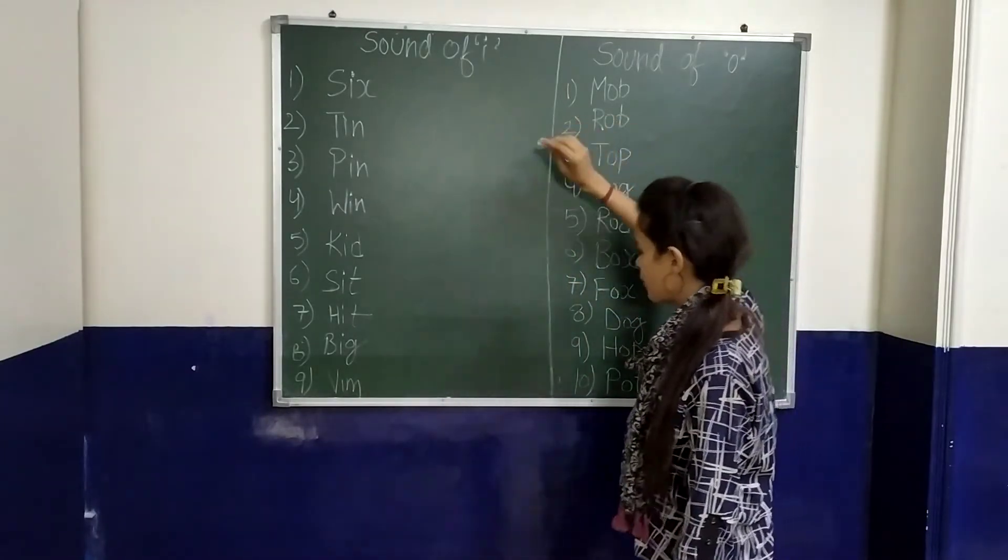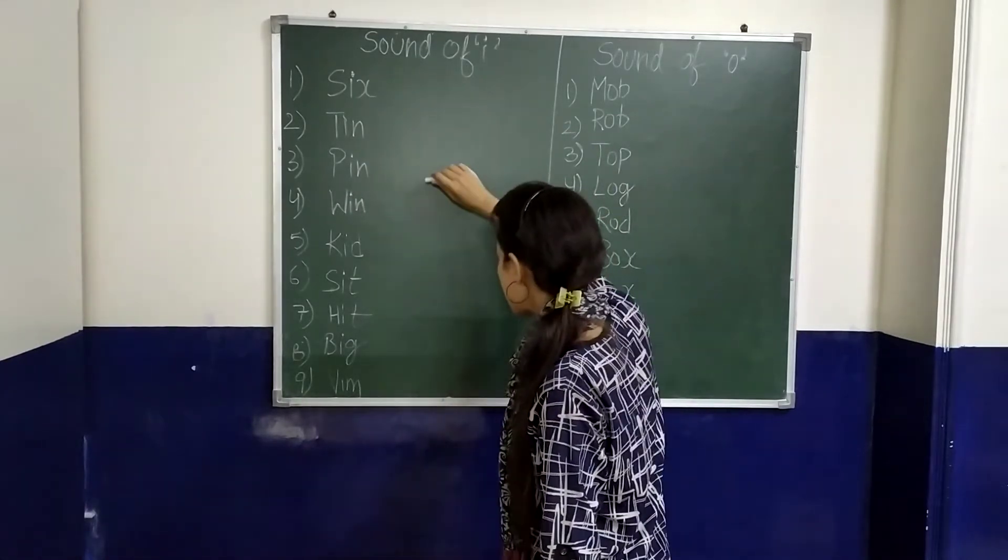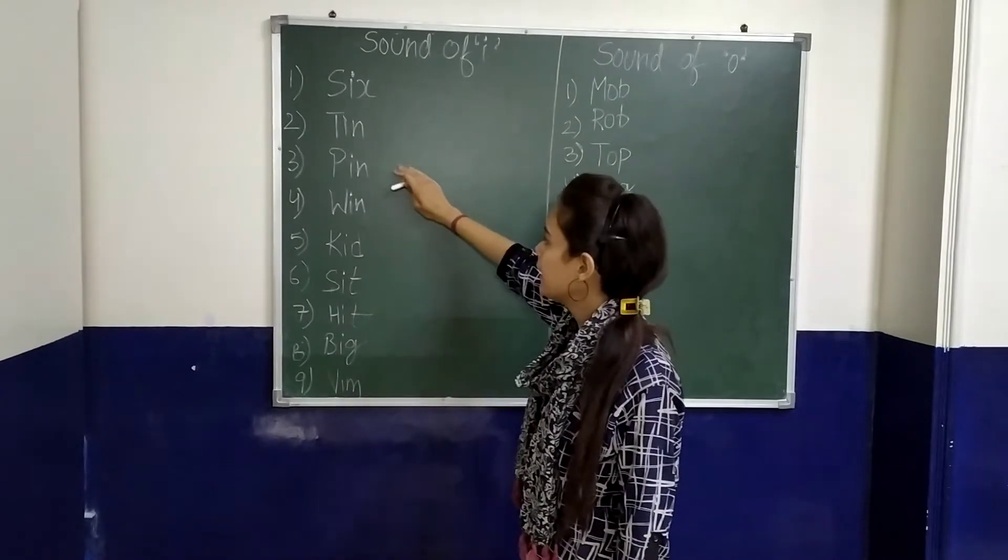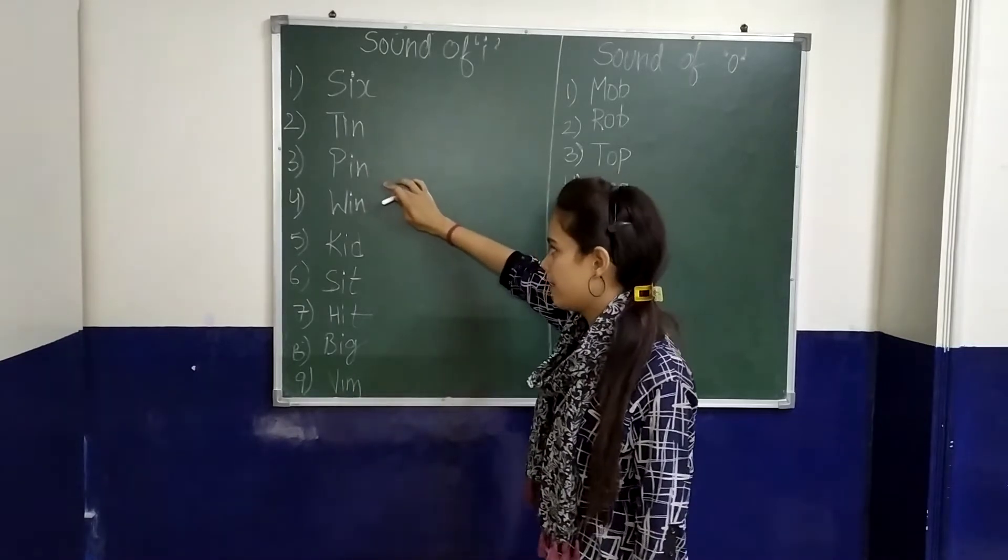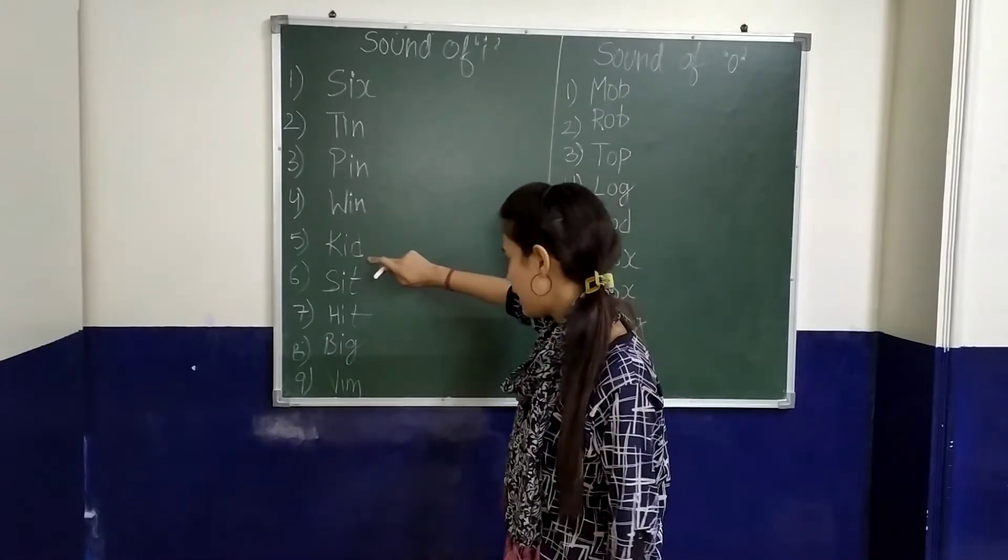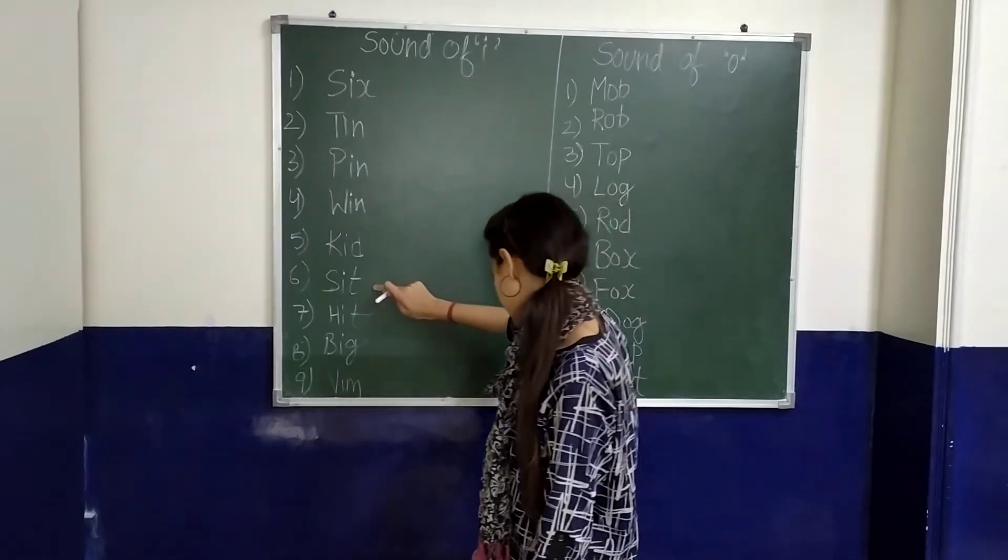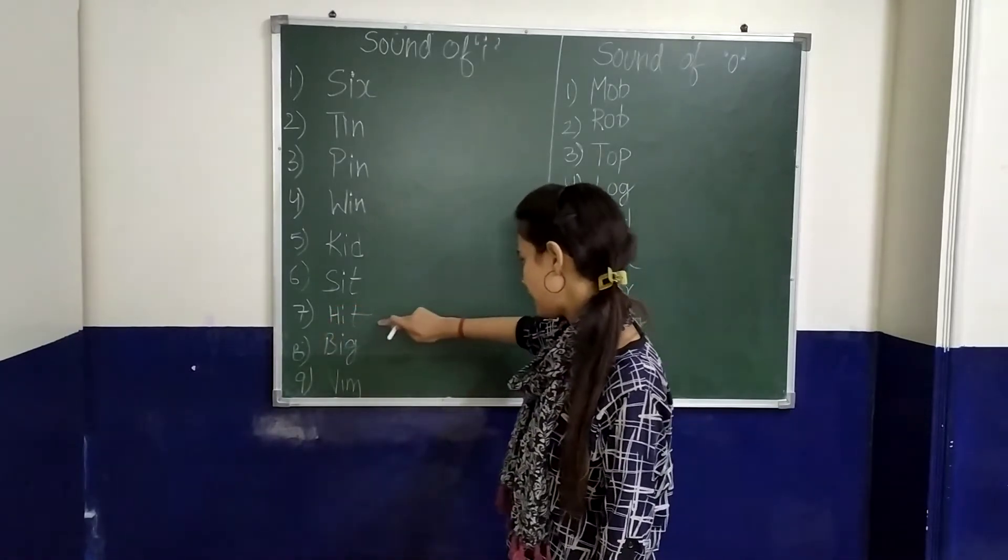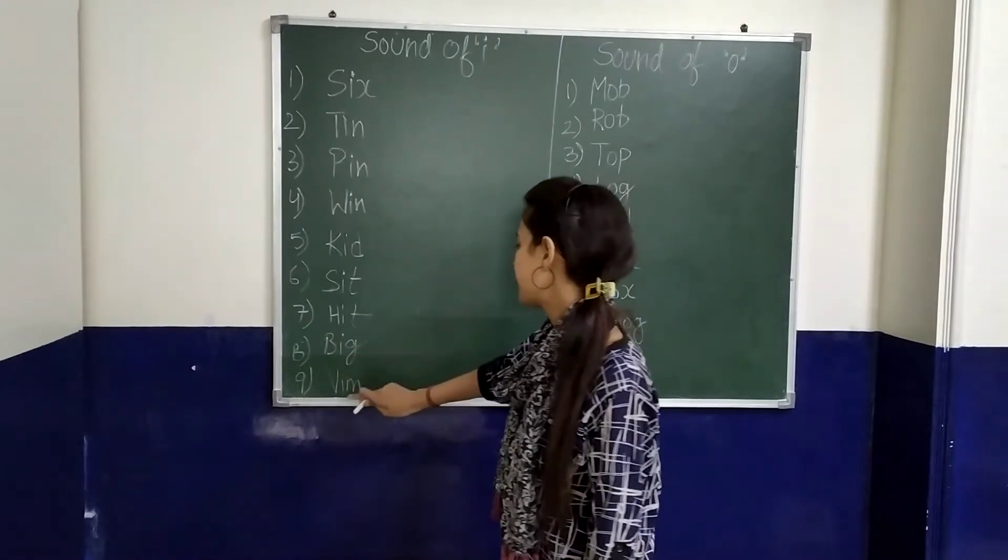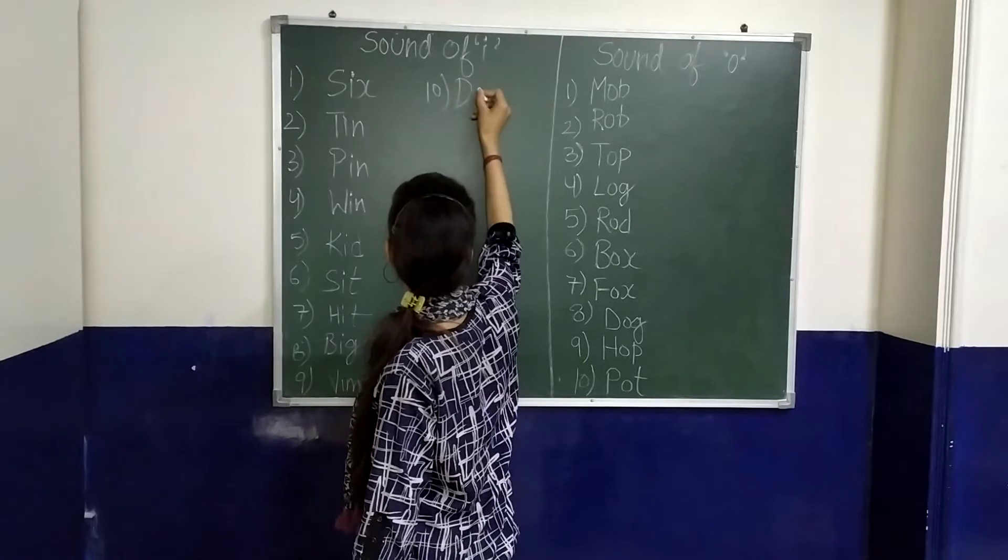W-I-N, win. K-I-D, kid. S-I-T, sit. H-I-T, hit. B-I-G, big. B-I-N, bin. D-I-M, dim.